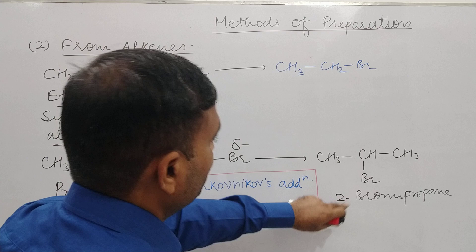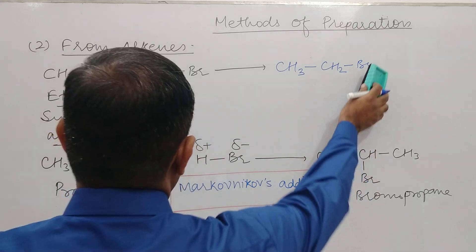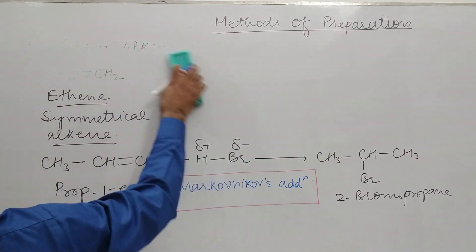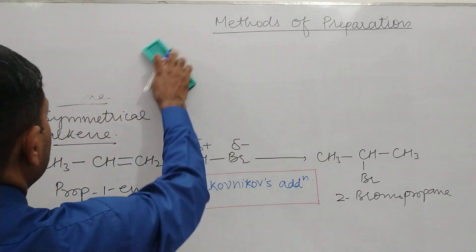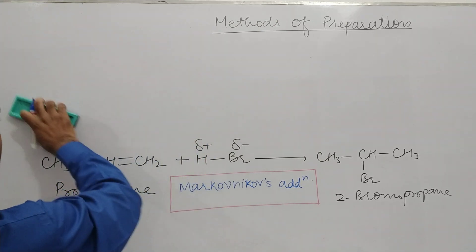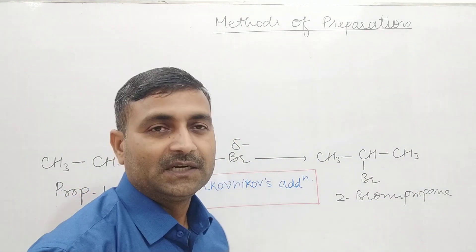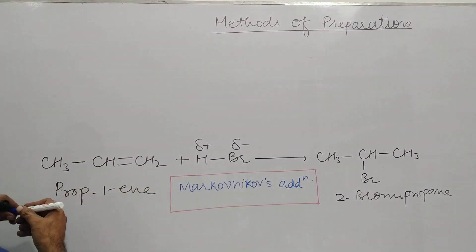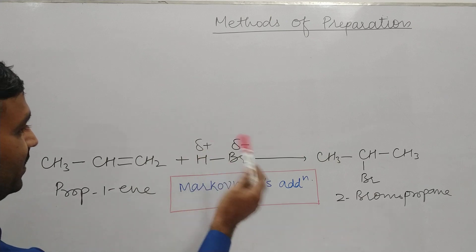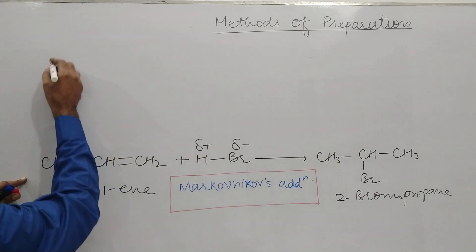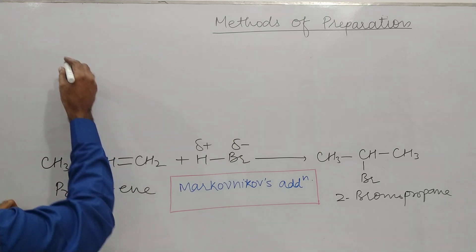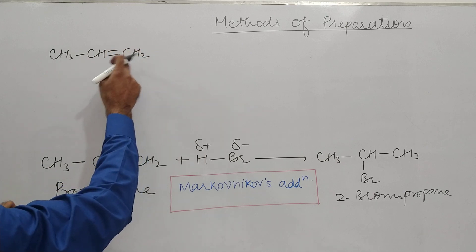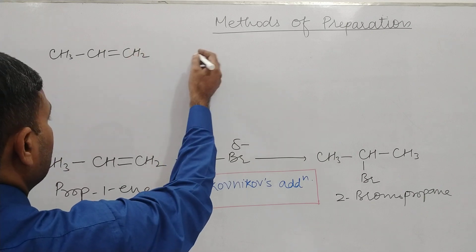Now if in place of 2-bromopropane we want to prepare 1-bromopropane, what changes are required? Is the same rule applicable or are some modifications needed? According to Kharasch, if we take organic peroxide, then the reaction gives us 1-bromopropane. We have CH3–CH=CH2, which is propene and an unsymmetrical alkene.